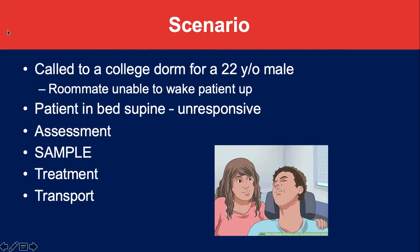You're going to get a blood sugar on him, and because he's unresponsive, you'll do a head-to-toe assessment. Initially, with a 22-year-old male in a college dorm who can't wake up, your first thought is probably drugs or alcohol — which is very much a possibility. But unless you do a complete assessment, you might miss something else. In this case, your rapid trauma assessment reveals a big goose egg — a big bump on the back of his head.